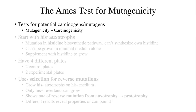The AIMS test for mutagenicity tests for the potential of a compound to be carcinogenic or mutagenic. For our purposes, we assume carcinogenicity and mutagenicity to be very similar.